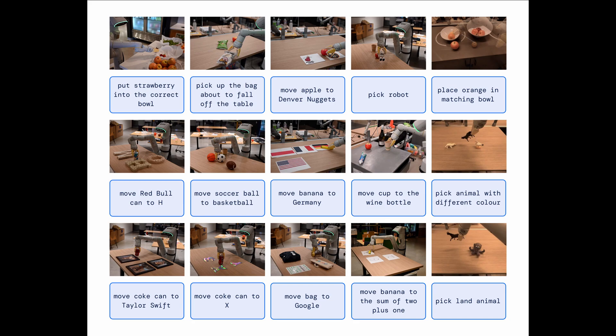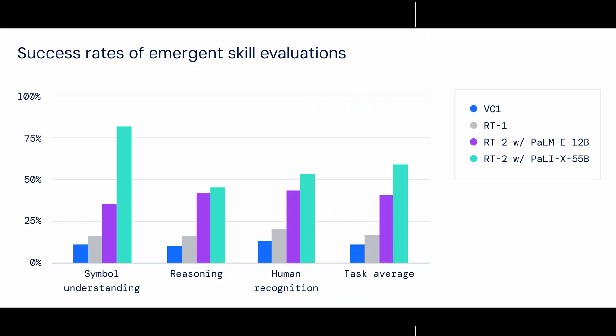RT-2 shows improved generalization capabilities and semantic and visual understanding beyond the robotic data it was exposed to. This includes interpreting new commands and responding to user commands by performing rudimentary reasoning, such as reasoning about object categories or high-level descriptions. We also show that incorporating chain-of-thought reasoning allows RT-2 to perform multi-stage semantic reasoning, like deciding which object could be used as an improvised hammer — a rock — or which type of drink is best for a tired person — an energy drink.